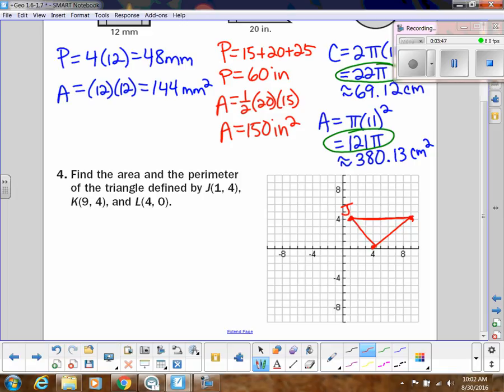Okay, so this is J, K, and L. So very important in geometry. Draw your diagram so you know what it looks like. Then it says find the perimeter and the area.